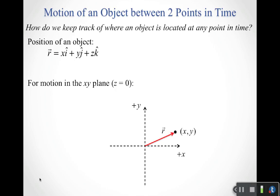To keep track of where the object is located at any point in time, we're going to talk about the position. The position we'll denote by vector r, and it has components x, y, and z — telling us the x, y, and z positions. As a vector, we write this as x·î + y·ĵ + z·k̂.